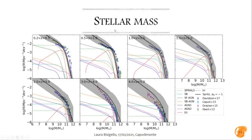Looking at more physical parameters: here is the stellar mass function from redshift ~0.3 to ~4.5. The solid black line is our fiducial simulation, the gray area shows the errors, the colored lines show contributions from different galaxy populations, and the crosses and circles are values from the literature. Our simulation is in agreement with observations at redshift above 1, but below redshift 1 we have some tension at the massive end, where we underestimate the number of massive galaxies.